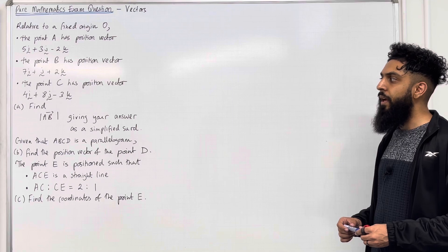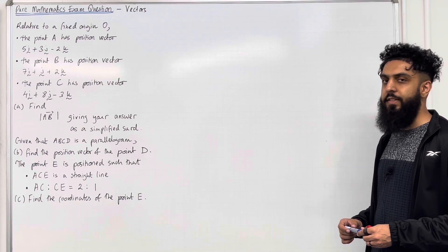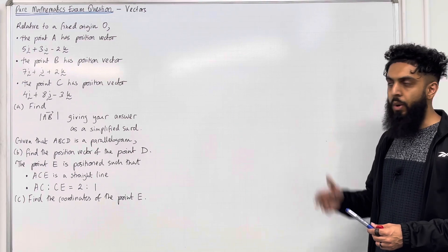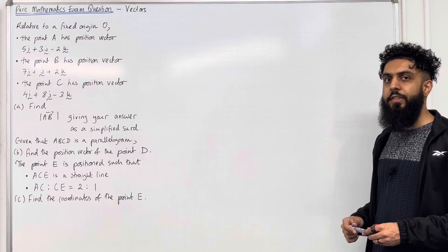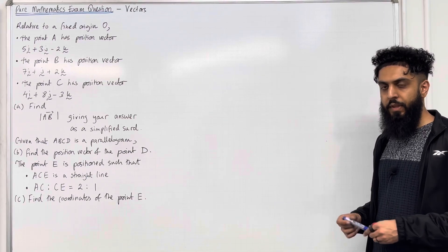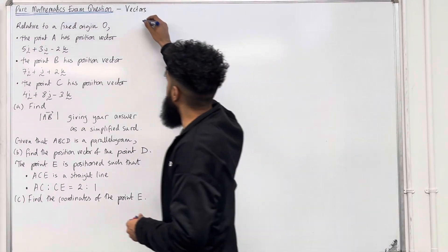Part A: find the magnitude of the vector A to B, giving your answer as a simplified surd. Please pause the video, have a go at part A, and once you've got your complete solution, play the video.